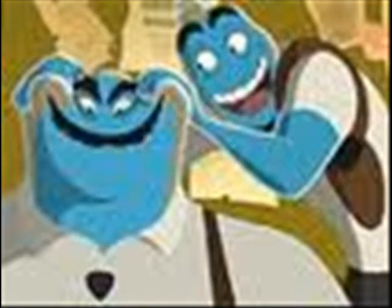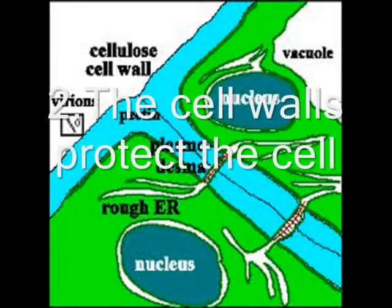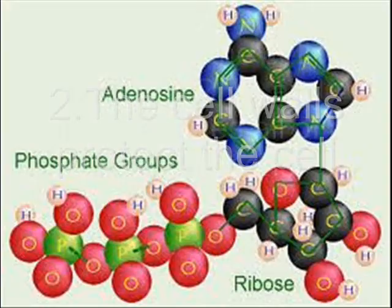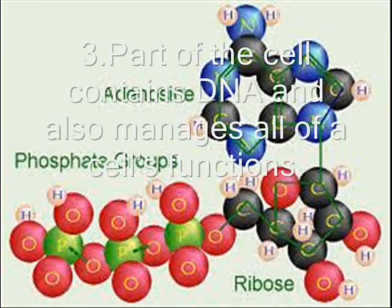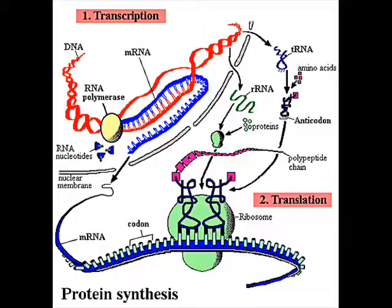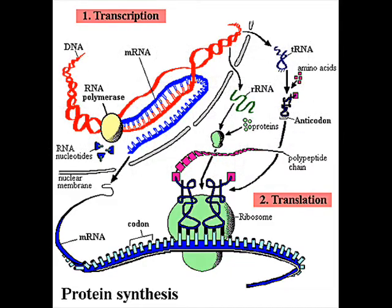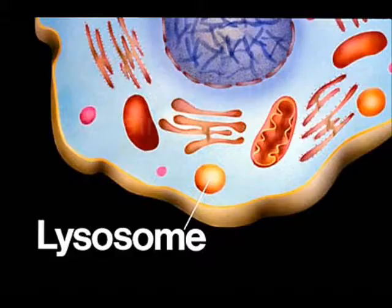Cells are living. Cell walls protect the cell. The heart of the cell contains the movement and also manages the cell. The cells are a site in a cell, or enzymes, are made according to the direction of the cells.